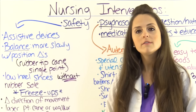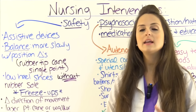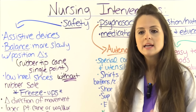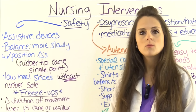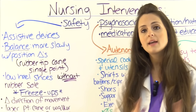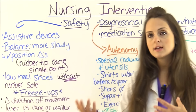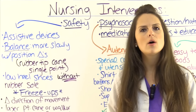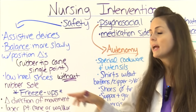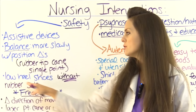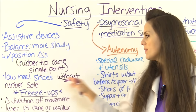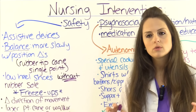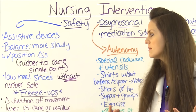For safety, first we want to teach them how to use assistive devices — canes, walkers, and handrails in the bathroom. Keep rugs off the floor that can cause slipping, and make sure pets don't get around their feet and cause tripping. To help with balance issues, tell them to change positions slowly. A rubber-tip single-point cane can help maintain stability. Shoe wear is very important — they want a low-heel shoe without a rubber sole, because rubber soles tend to grip the floor and can lead to tripping.